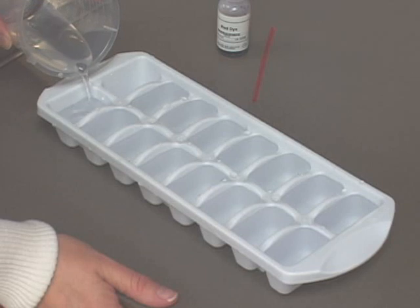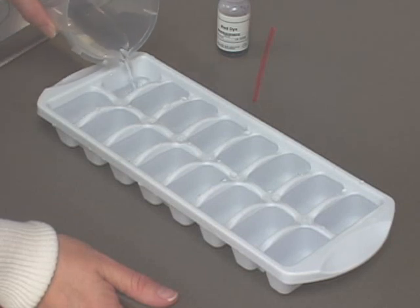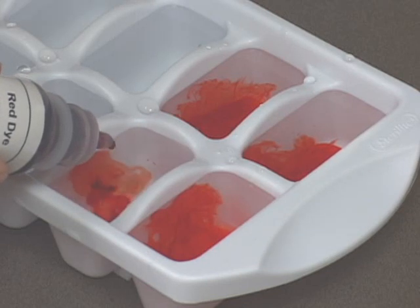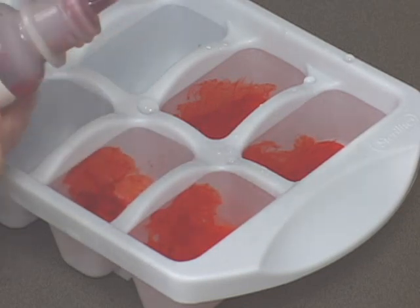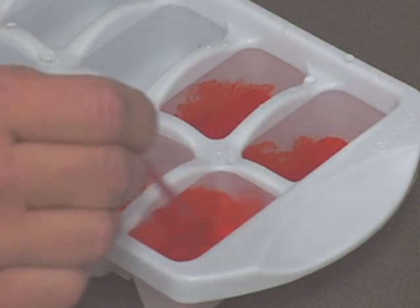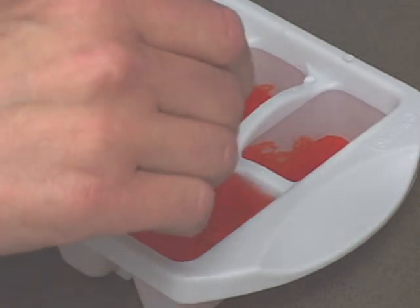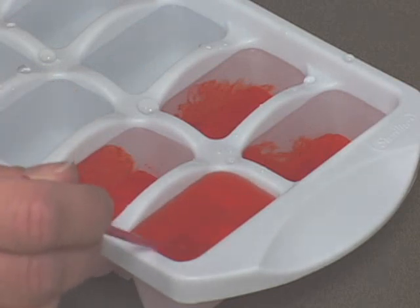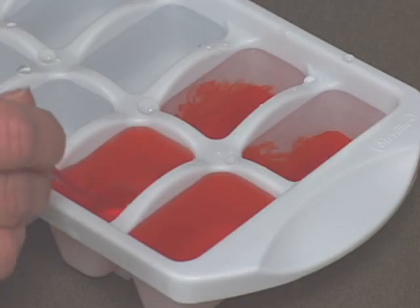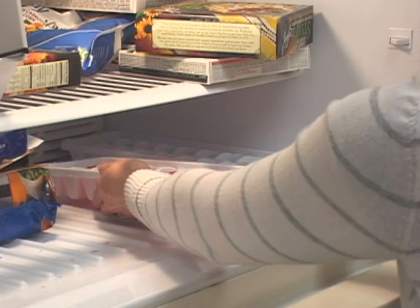A day before the experiment, we prepared colored ice cubes. We filled trays with water and mixed five drops of red food coloring into each cube compartment. For valid scientific results, we were careful that the same number of drops went into each compartment. We stirred each compartment before placing the tray in the freezer.